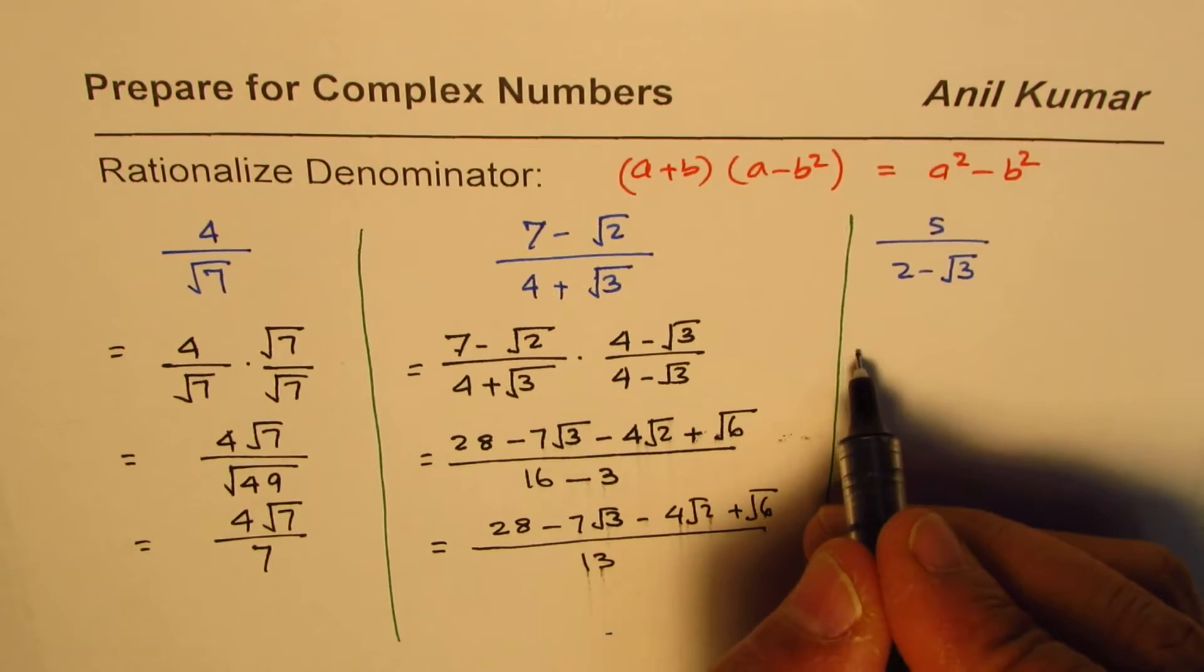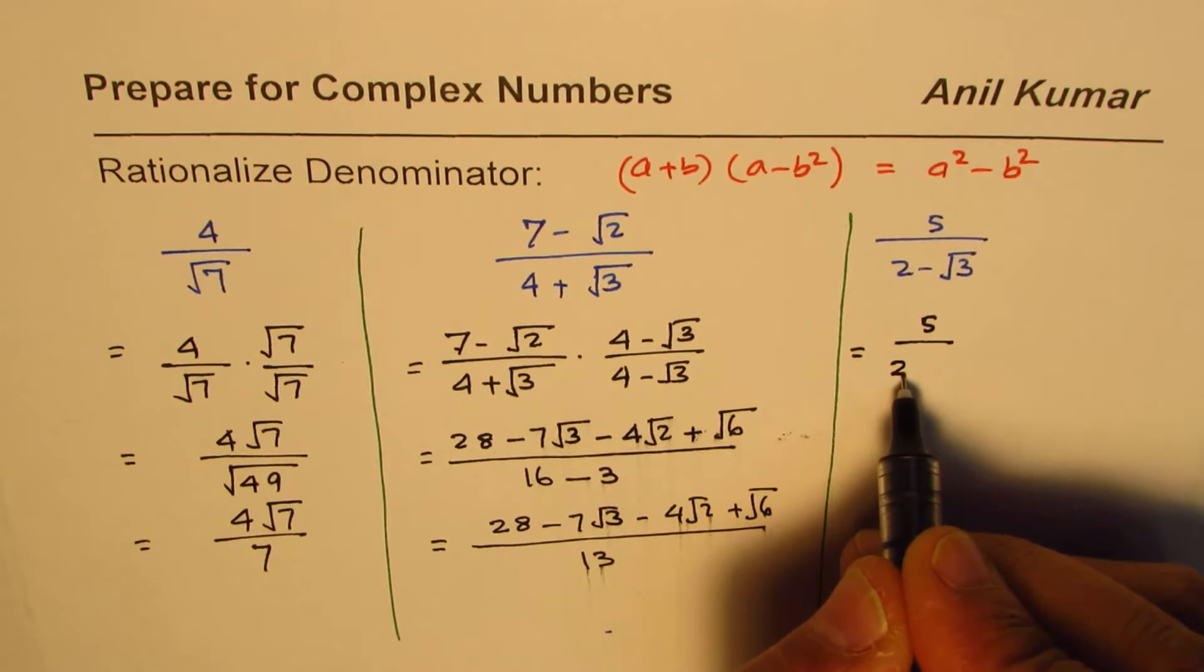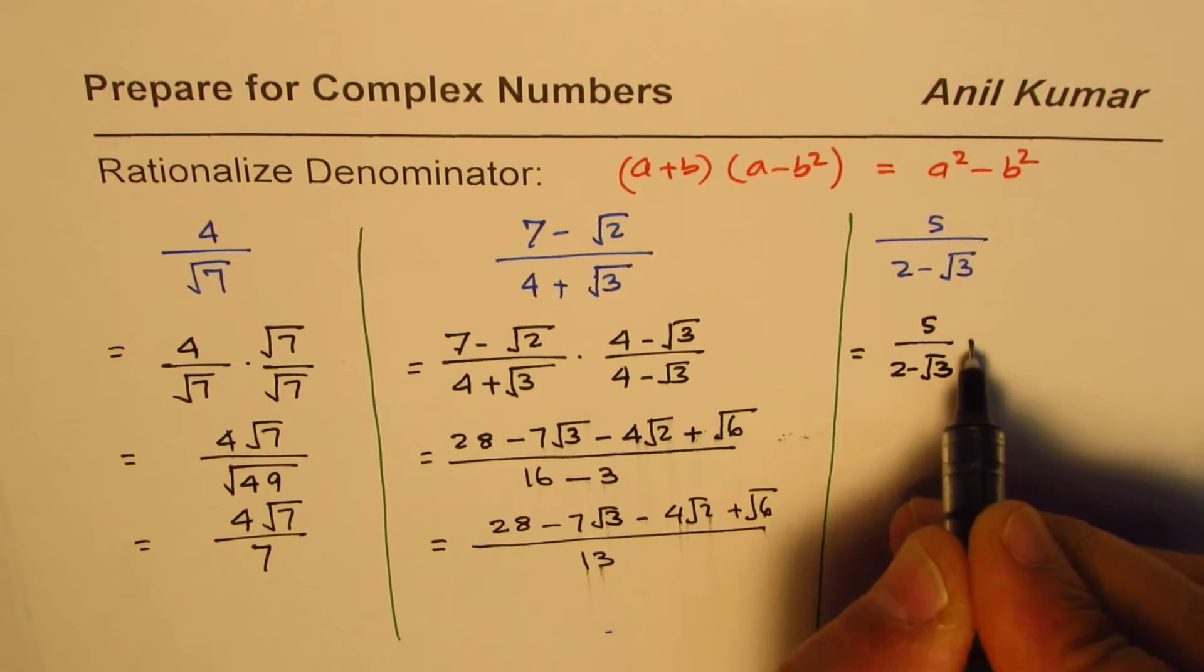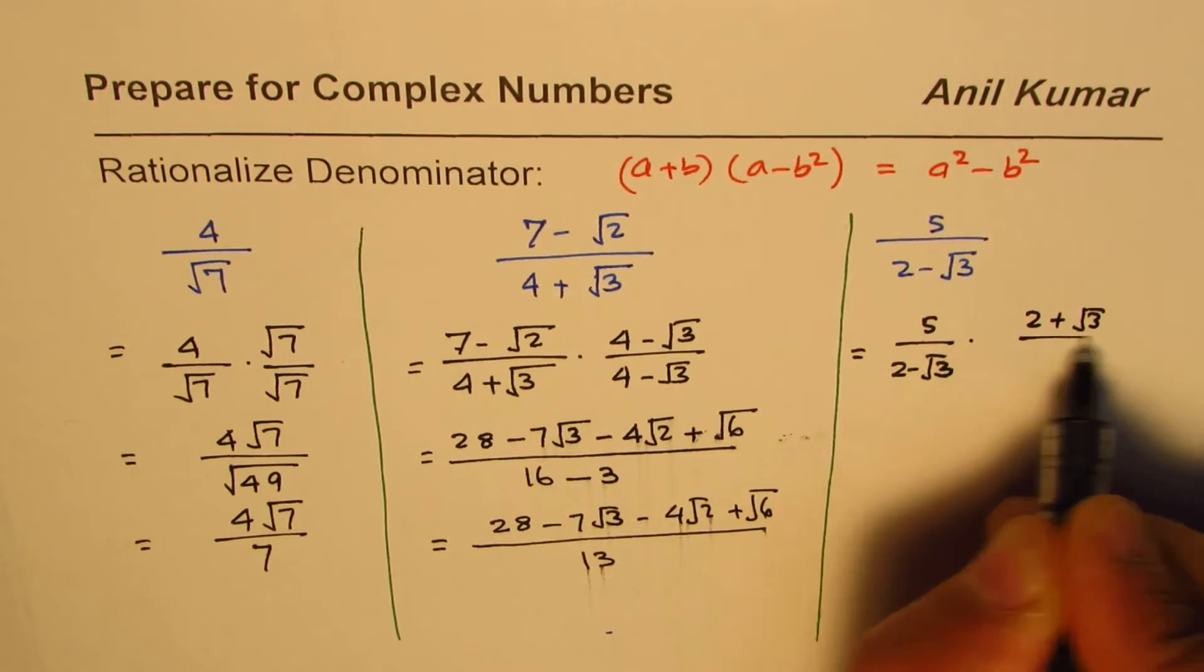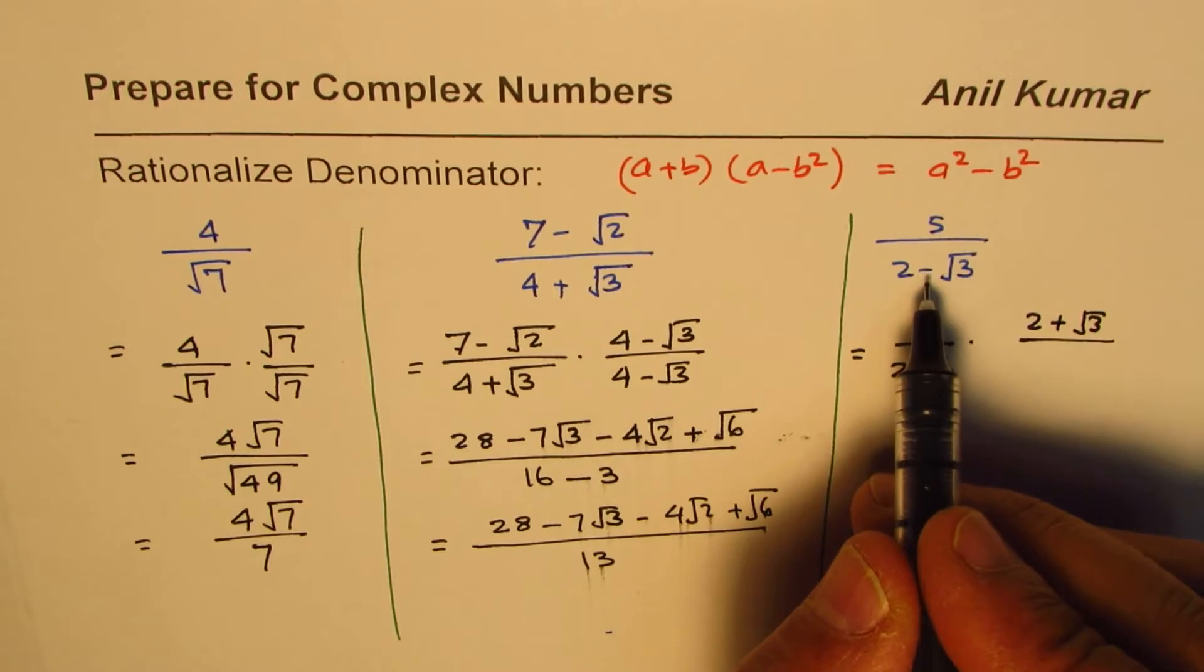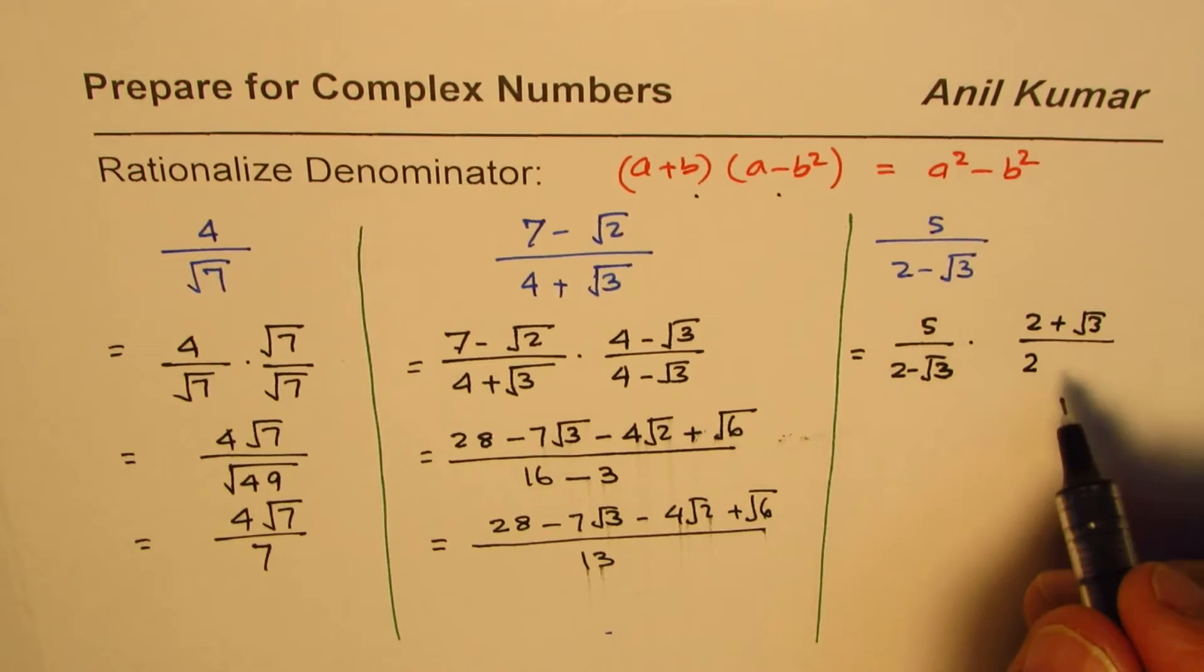5 over 2 minus square root 3, how will you do this one? Well, it is the same pattern. 5 over 2 minus square root of 3, multiply and divide by 2 plus square root of 3. Since it is negative in between, the conjugate will have positive. The idea is to use this formula to get rid of the square root term.